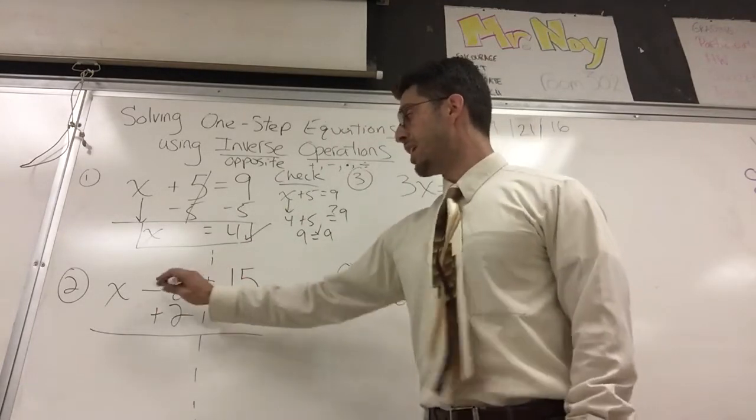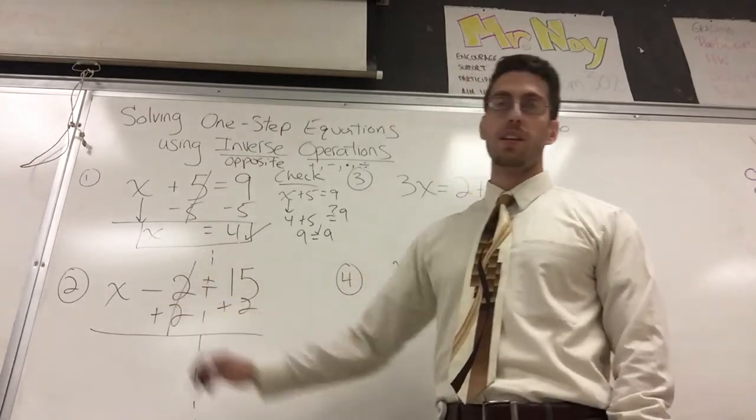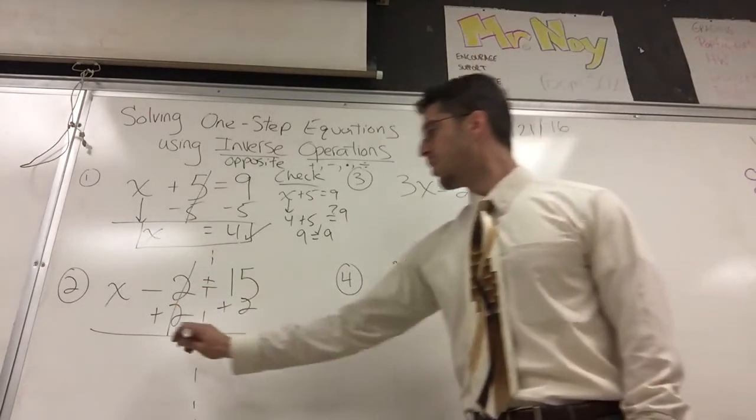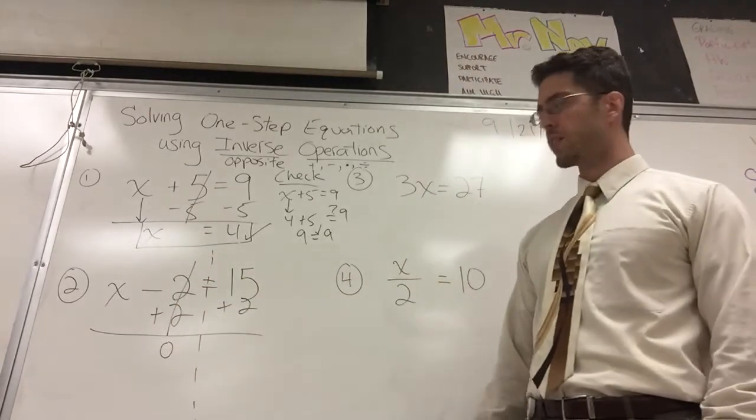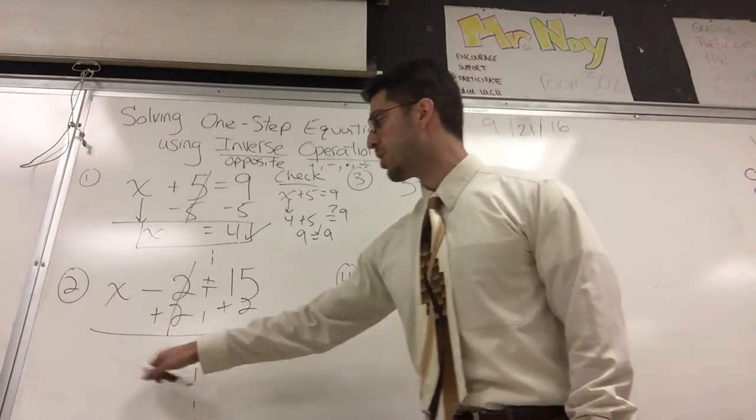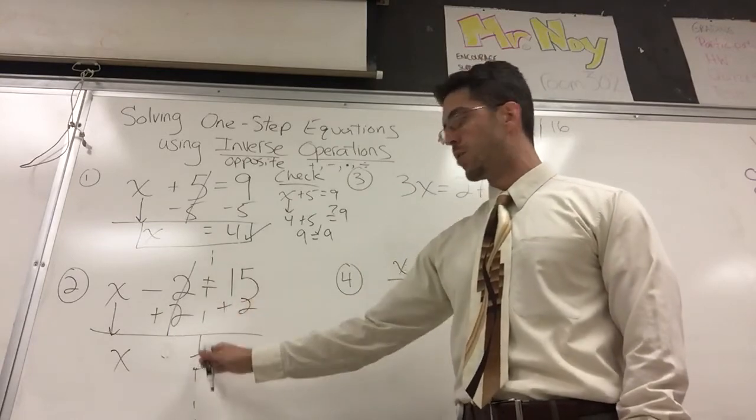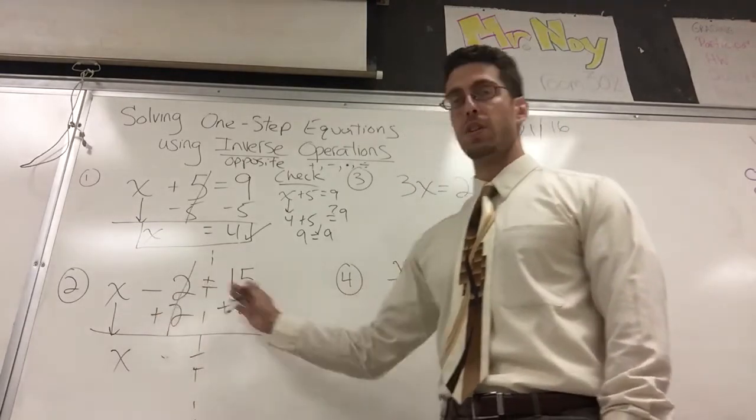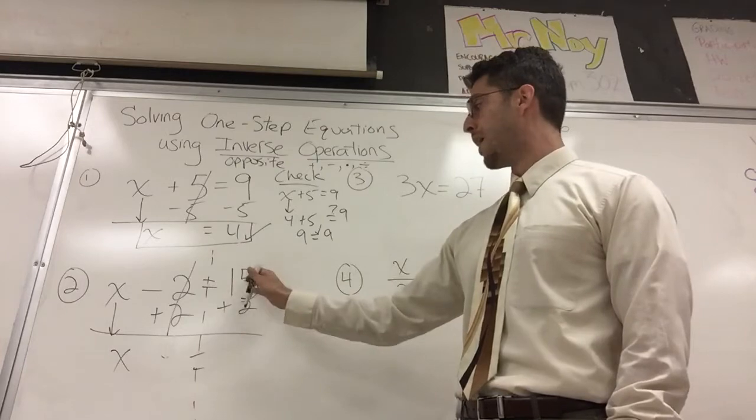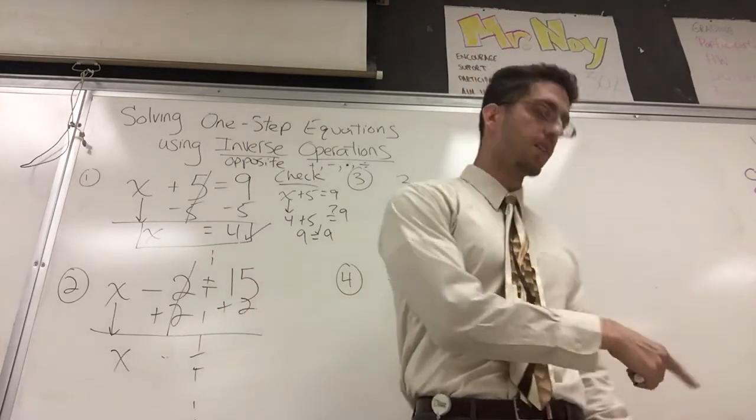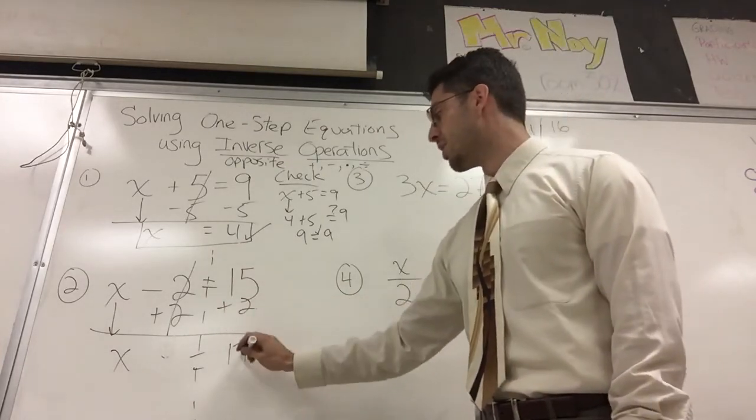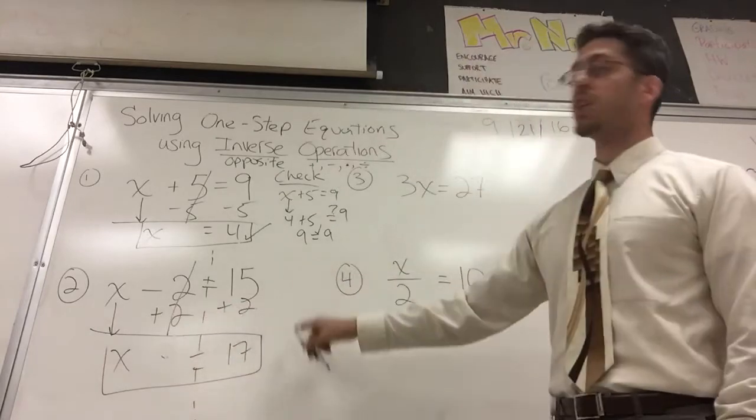So negative two plus two. Goodbye. Cancel out. Leave you with zero. I don't know why you would write the zero. Some rookies write the zero. You're not a rookie. Don't write the zero. Just drop down the x. Drop down the equal sign. Slide it right down along that line. Do not move the equal sign anywhere else. Slides right down. And 15 plus two. Grab a calculator. That's right. 17. Great job. You do the check on your own.